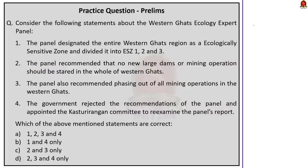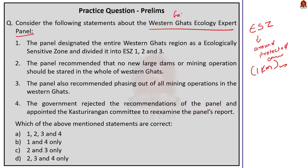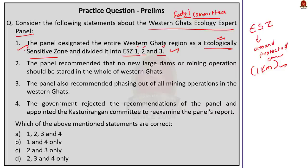Recently, the Supreme Court of India directed the establishment of a mandatory eco-sensitive zone of minimum one kilometer from the demarcated boundary of every protected area. This question has four statements about the Western Ghats Ecology Expert Panel report. Statement one — the panel designated the entire Western Ghats region as an ecologically sensitive zone and divided it into ecologically sensitive zone 1, 2, and 3 — is correct. The panel, popularly known as the Gadgil Committee, recommended designation of the entire Western Ghats as an ecologically sensitive zone with three levels of ecological sensitivity.